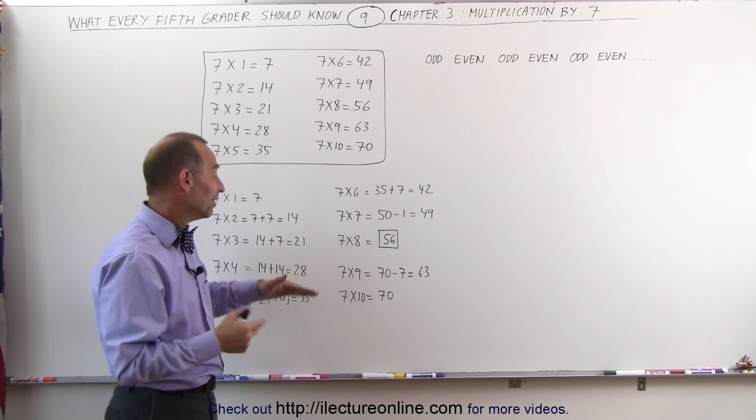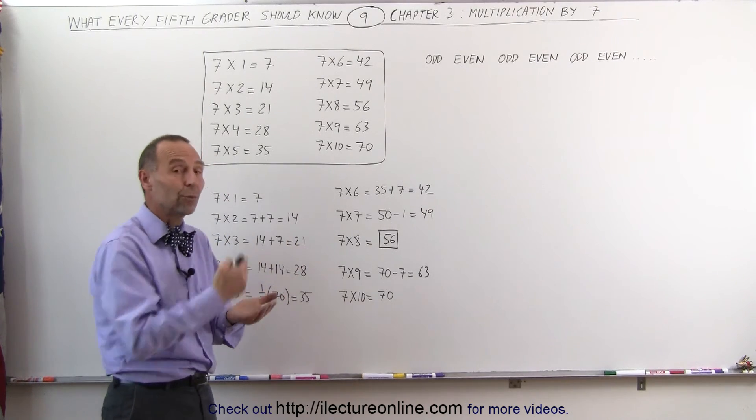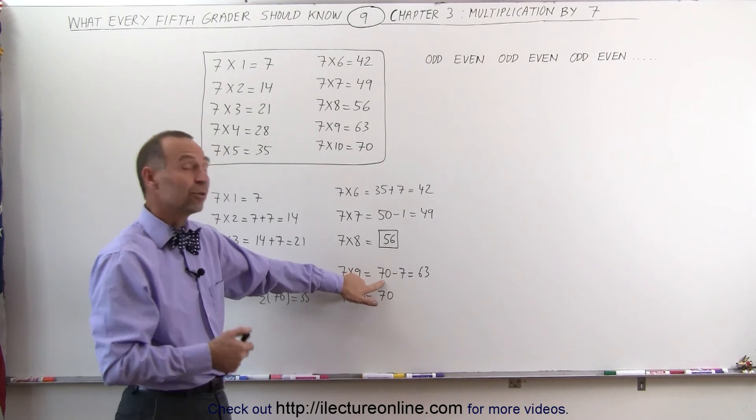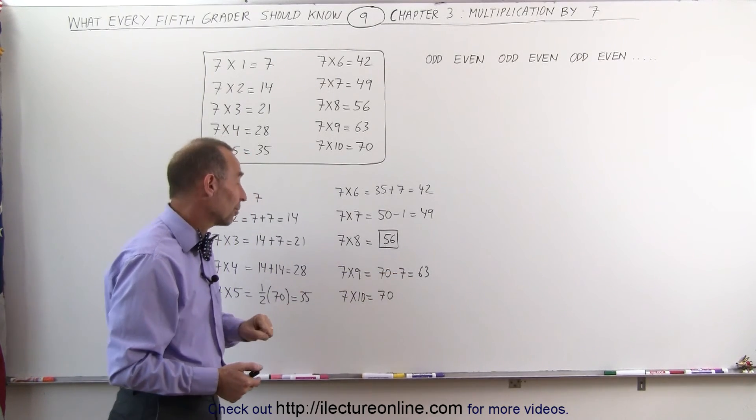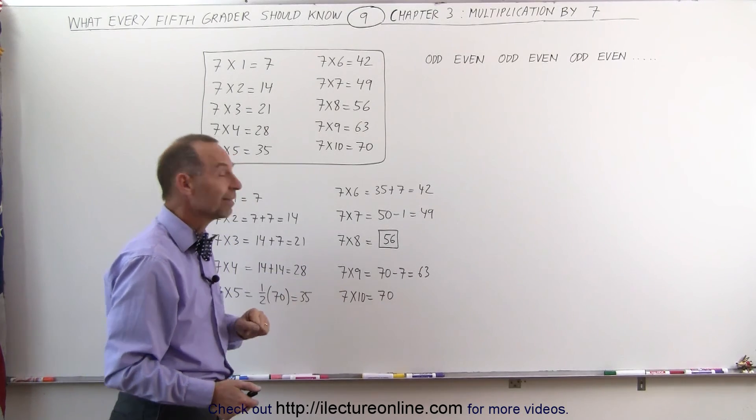7 times 9, that's always the easy one. Anytime you multiply times 9, you multiply times 10 and subtract the number from it. In this case, 7 times 9 is 7 times 10, which is 70, minus 7, gives you 63. And finally, of course, 7 times 10, you simply add a 0, and you get 70.